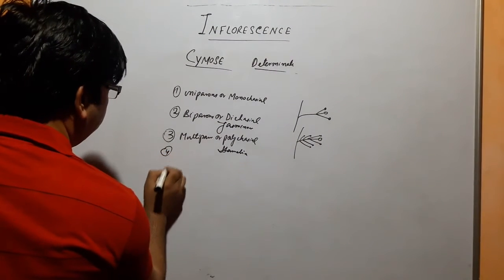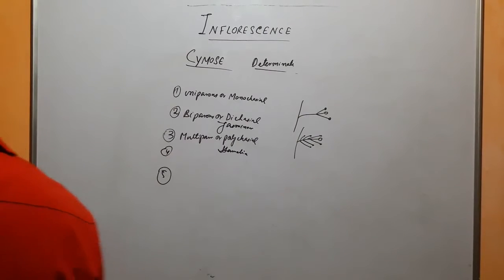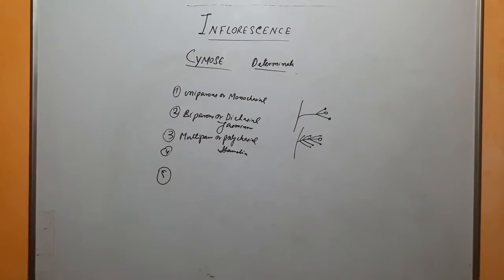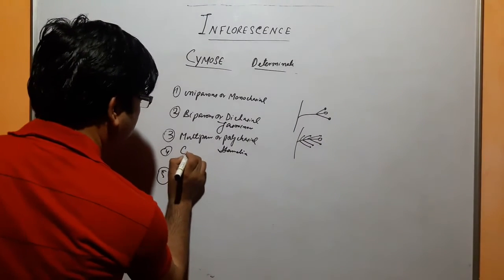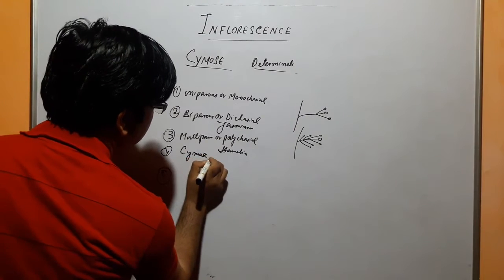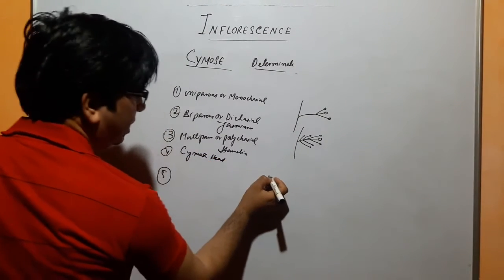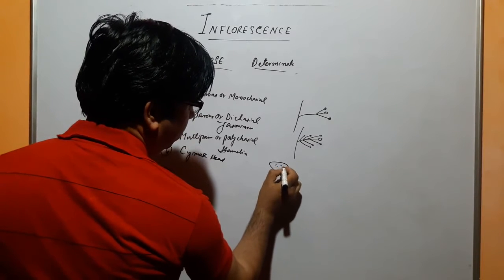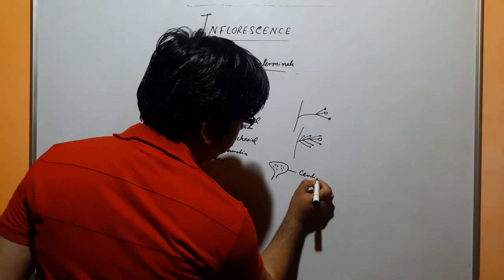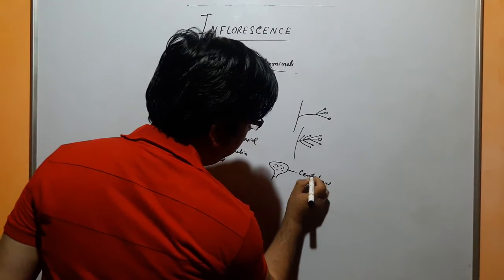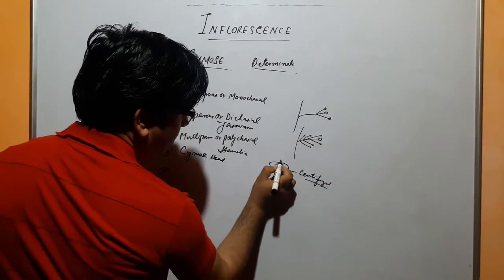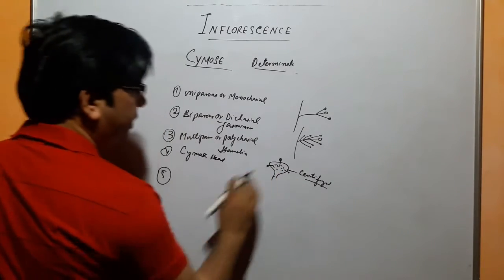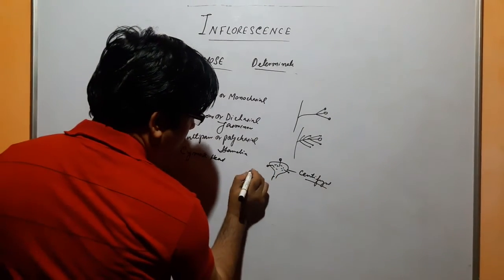Now the fourth and fifth type — so there are total five types of cymose. That is called cymose head. What is here? In cymose head we have a receptacle, and the arrangement of flowers is centrifugal — old flowers towards center, new ones towards outside.